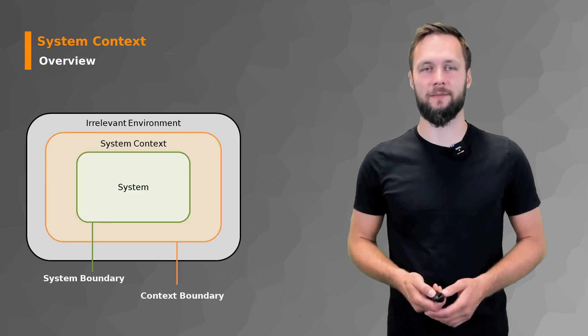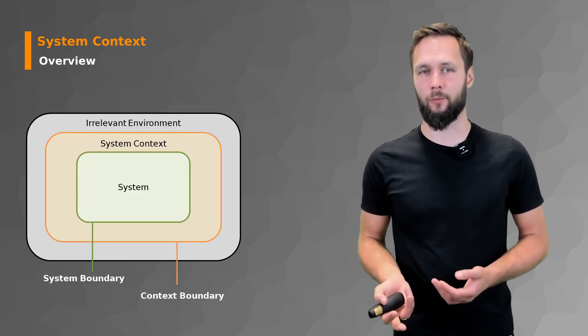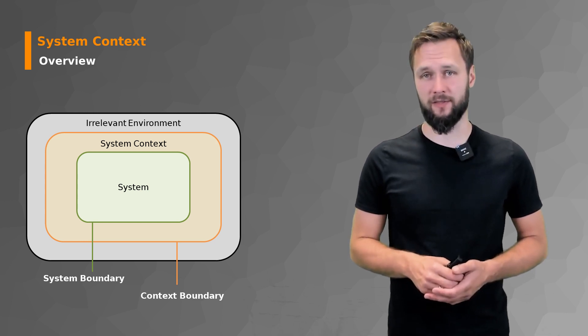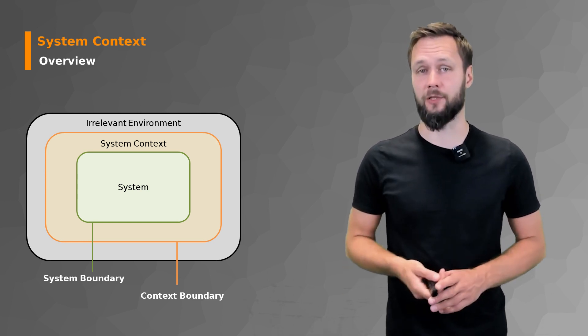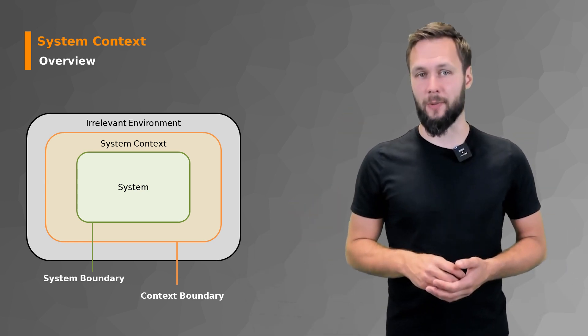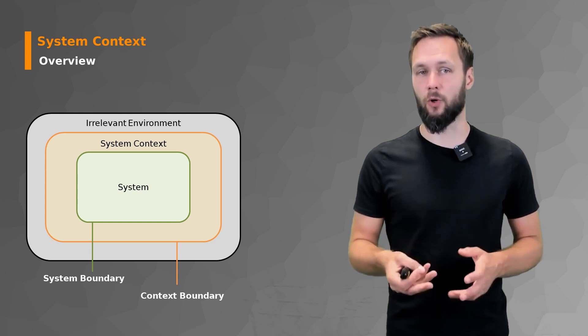So first we're going to talk about the system context. If you look at this figure where we have the green square in the middle representing our system that we're concerned with as part of our requirements engineering process and we have another yellow square around this which represents the system context.